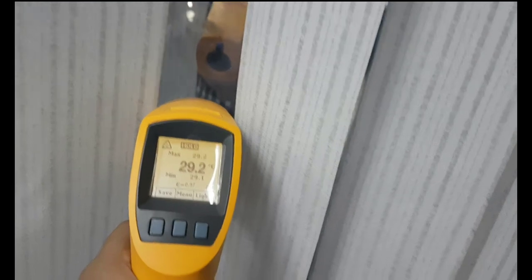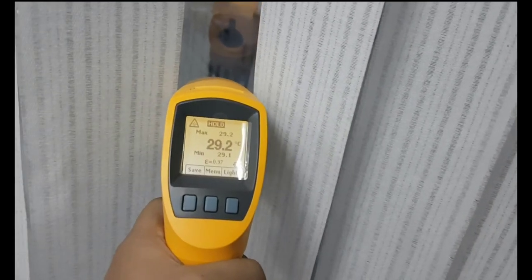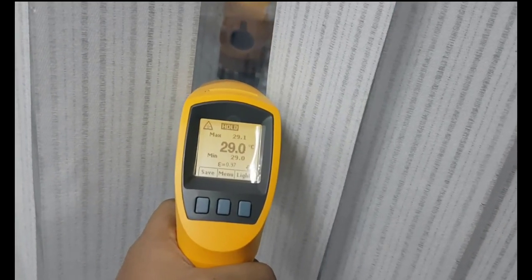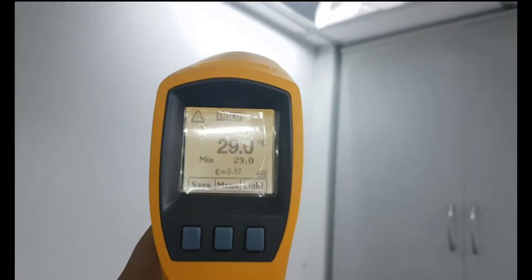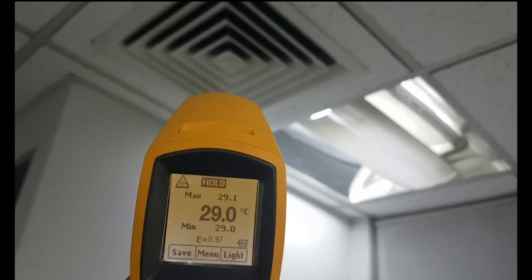Next, we can measure the temperature of another place. This is the glass wall. I'm clicking the trigger and it's showing that its temperature is 29 degrees Celsius, which is higher.